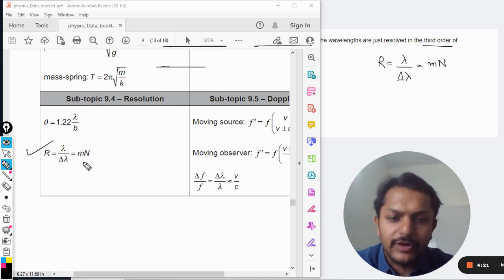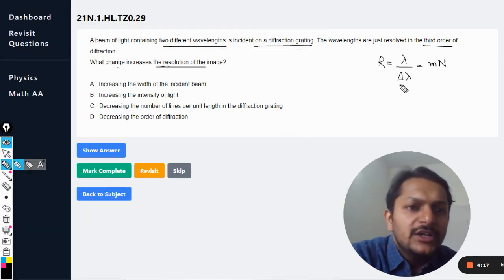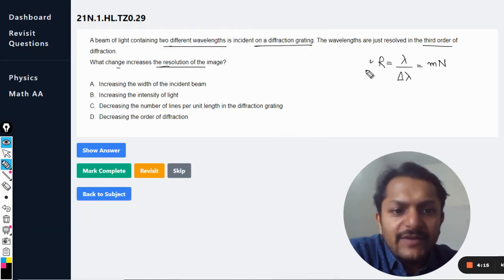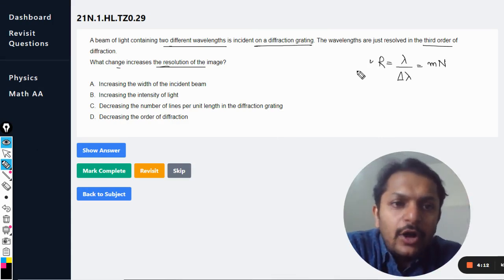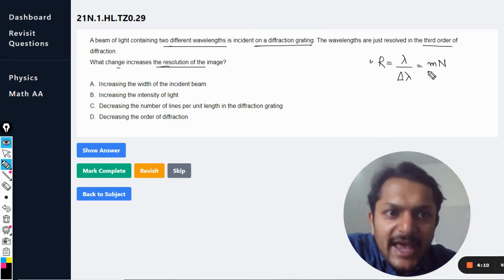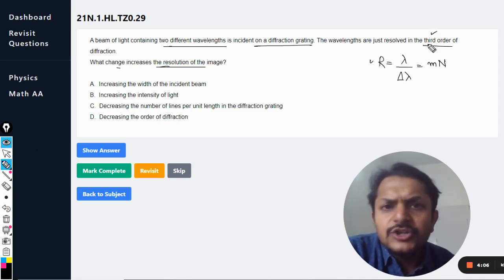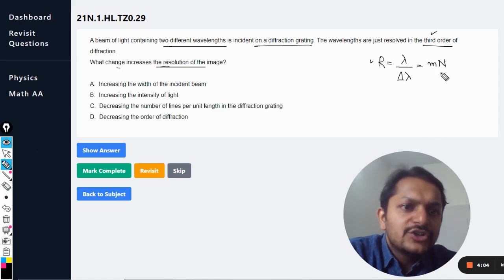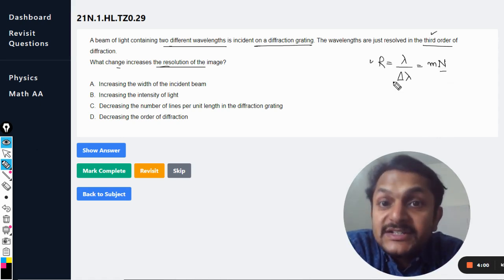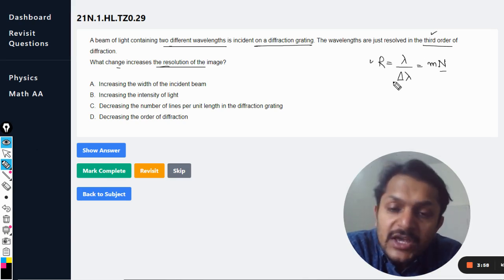So what else? Now we want to increase the value of R, that is the resolution. And how can we do that? Obviously, either you increase m, the order of the diffraction, but it is given that it is third order, so you can't increase or decrease that. So obviously the capital N. Capital N is the total number of slits which are illuminated with the light. So let us see what is there in the options here.